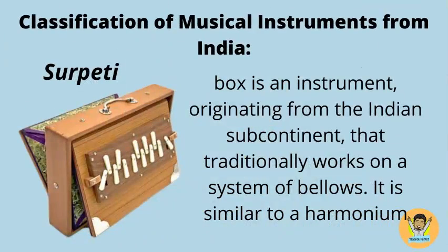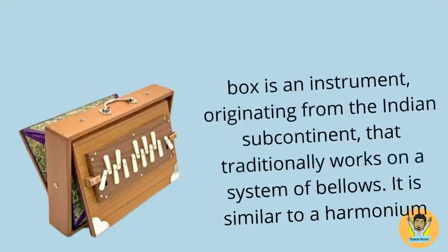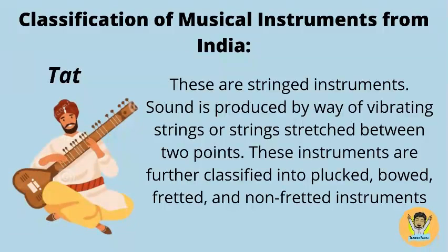The Serpati box is an instrument originating from the Indian subcontinent that traditionally works on a system of bellows; it is similar to a harmonium. Tat are stringed instruments where sound is produced by vibrating strings stretched between two points. These instruments are further classified into plucked, bowed, fretted, and non-fretted instruments.